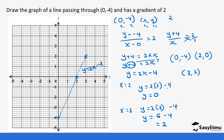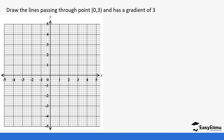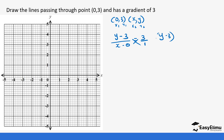Let's do another question. The line passes through (0, 3) and has a gradient of 3. The formula is the same. We have (0, 3) as x1, y1, and introduce another point (x, y) as x2, y2 with gradient 3. The change becomes (y - 3) over (x - 0) = 3 over 1. Cross-multiplying: y - 3 = 3x, so y = 3x + 3.